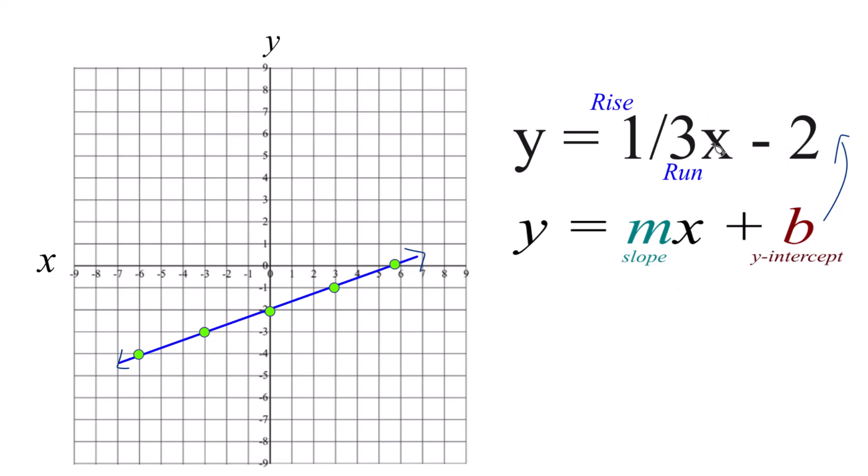If you put a value in for x, you get a value for y, and you plotted that, it would be somewhere on our line here. That's it. This is Dr. B graphing the linear equation of y equals 1 third x minus 2. Thanks for watching.